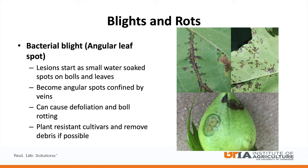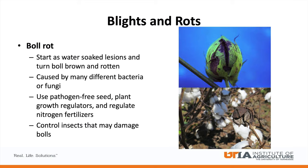Boll rot is a common term used whenever rotting of the boll is occurring in the field. There are many different pathogens that can cause boll rotting. Lesions usually start as water-soaked and progressively turn the boll brown and rotten. Any damage to the boll, such as mechanical or insect feeding, can be used by pathogens to infect the bolls. Planting pathogen-free seed, effective use of plant growth regulators, and regulating nitrogen fertilizers all help with mitigating boll rot. Insect control in reproductive stage cotton also limits the damage points where boll rot pathogens can enter.